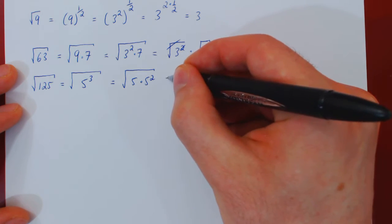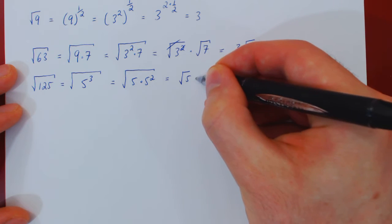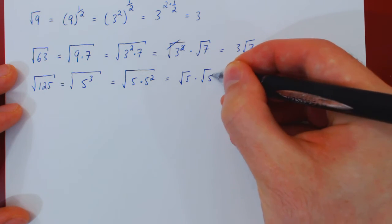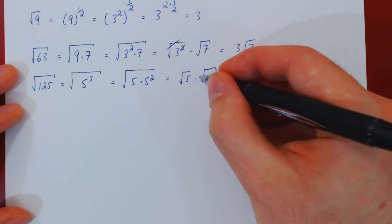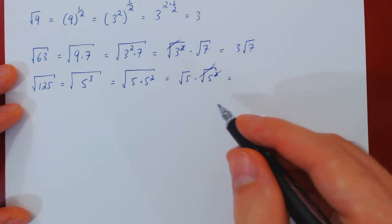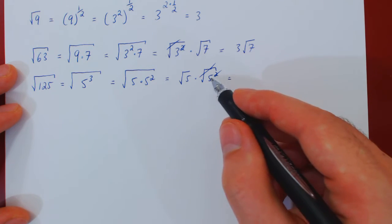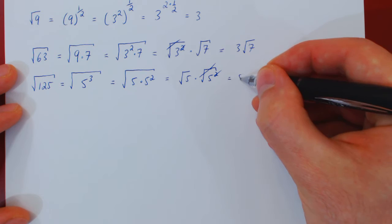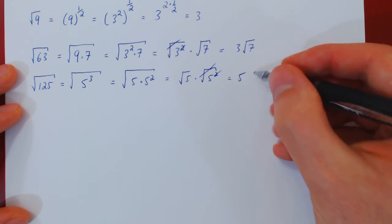So we can split the square root. We'll have root of 5 times the root of 5 squared. The root cancels the square, and in the end we're left with root of 5 times 5. I'll write the 5 first, so 5 times the root of 5.